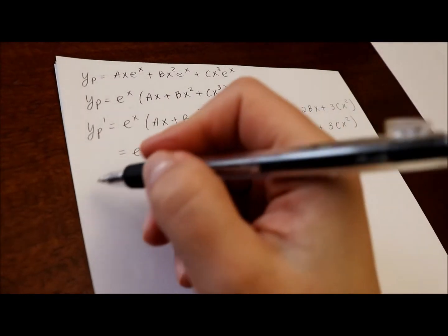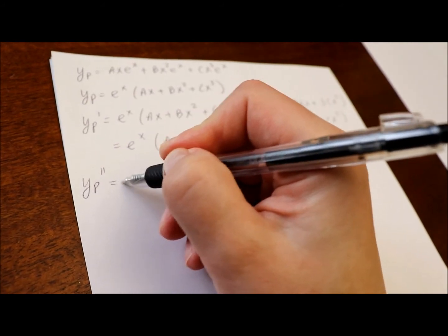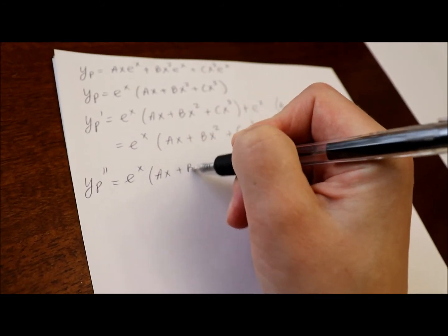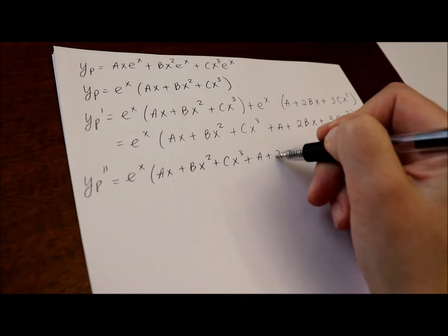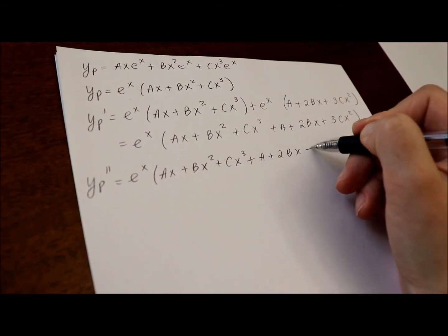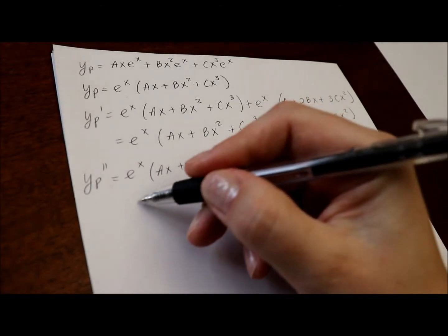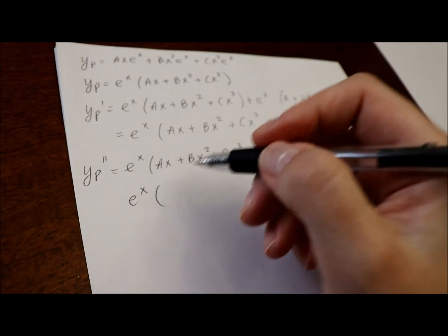Now, second derivative, again, we have to use the product rule. Derivative of e to the x itself, copy all that, plus e to the x times the derivative of that sum.